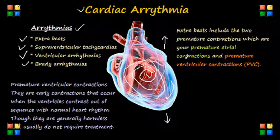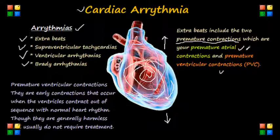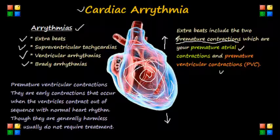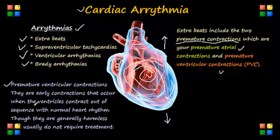Extra beats usually include two premature contractions: premature atrial contractions and premature ventricular contractions, or PVCs. Based on case studies with recent NCLEX takers, PVCs were mentioned as prominent on the exam. Premature ventricular contractions, or PVCs — also called PVBs — are early contractions that occur when the ventricles, the lower chambers of the heart, contract out of sequence with a normal heart rhythm. They are generally harmless and usually don't require treatment, but PVCs can cause more serious arrhythmias in people with heart disease or a history of ventricular tachycardia.